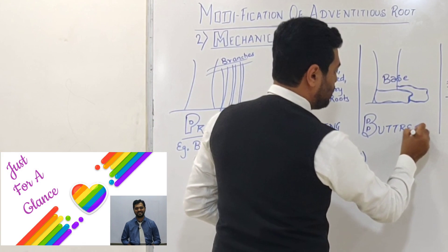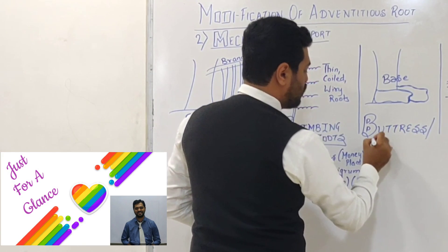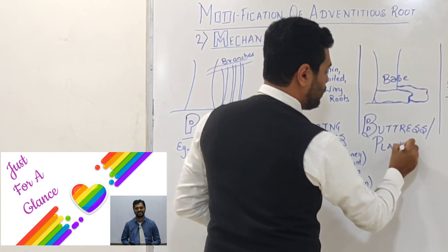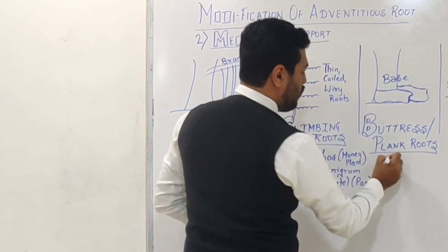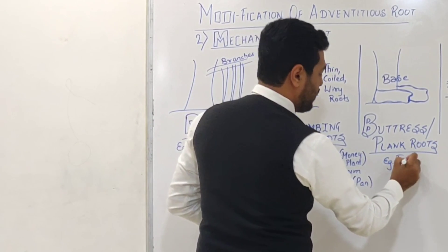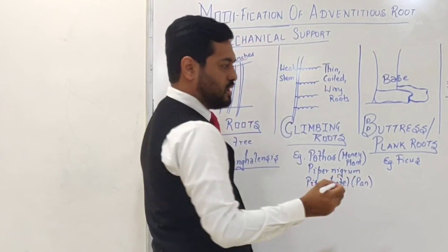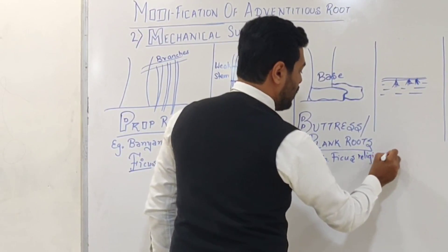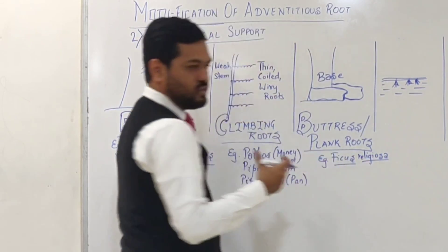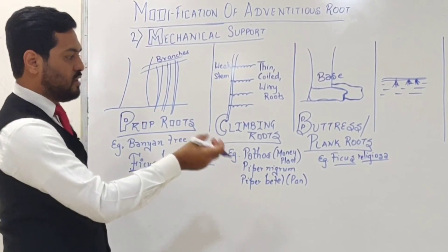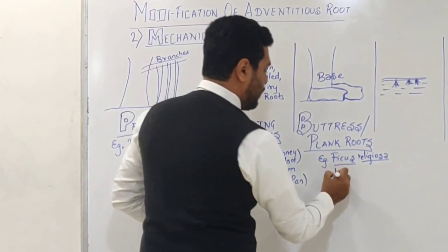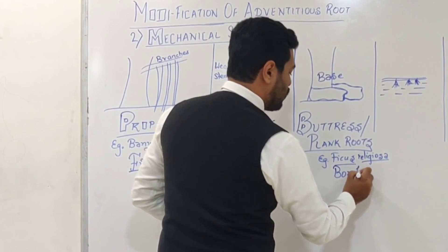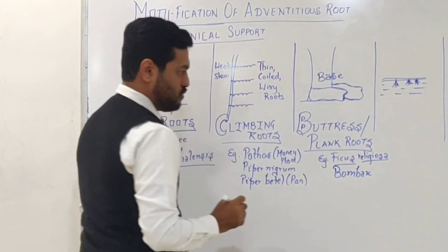These are known as buttresses or buttress roots, and also as plank roots. Such buttress or plank roots are observed in plants like Ficus religiosa — which we call the peepal tree, as it is revered in religious ceremonies — and also in Bombax. In peepal (Ficus religiosa) and Bombax, plank roots are seen at the base.